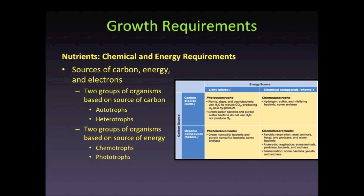Heterotrophs, on the other hand, must acquire reduced organic molecules such as carbohydrates, proteins, amino acids, and lipids from other organisms. Organisms can also be classified into two groups based on their source of energy — from light or from chemicals. Phototrophs utilize light as their source of energy to drive cellular processes, whereas chemotrophs utilize energy derived from redox reactions involving inorganic or organic molecules. Those utilizing organic molecules will catabolize them to capture energy via pathways such as aerobic cellular respiration or fermentation.